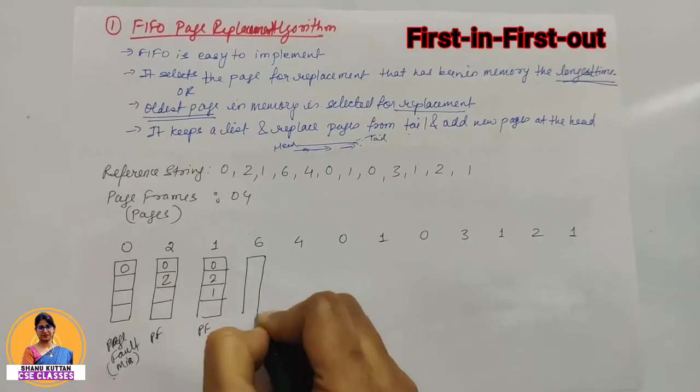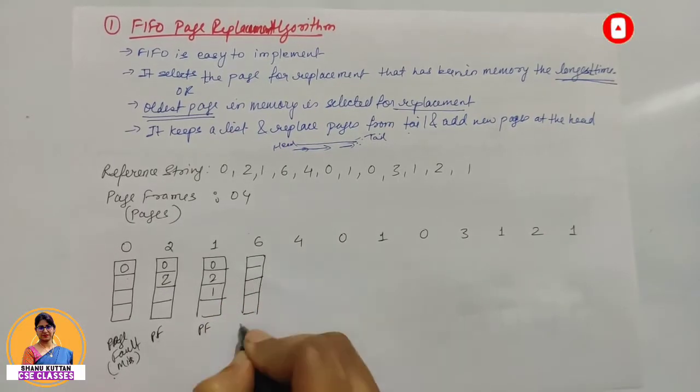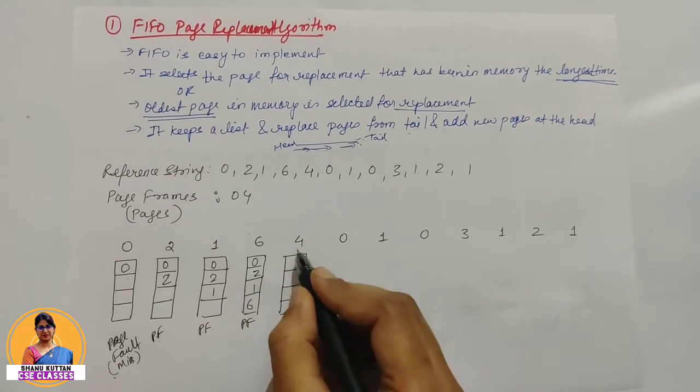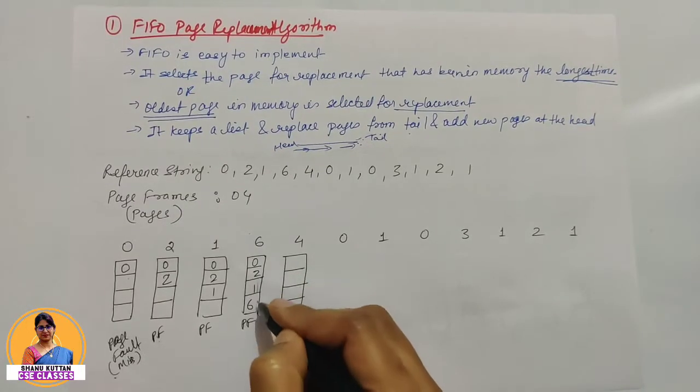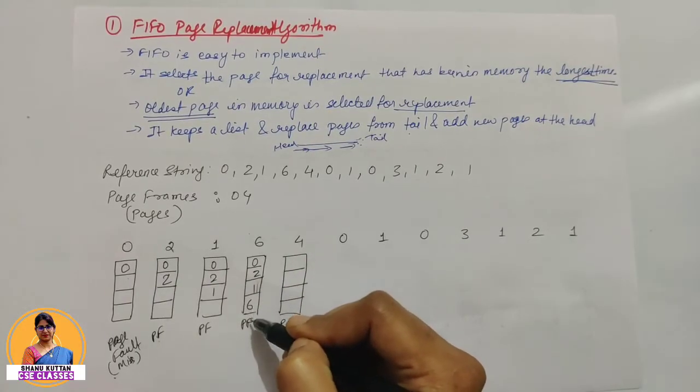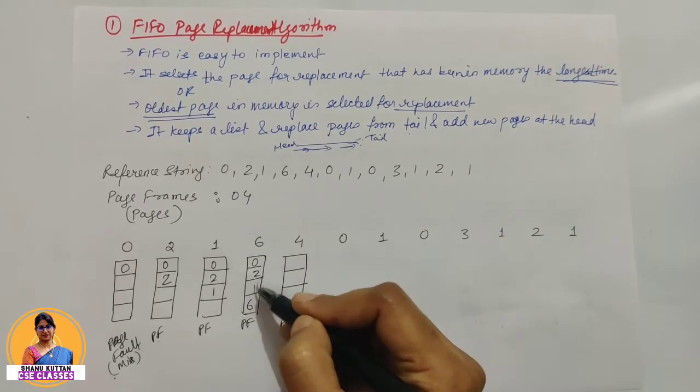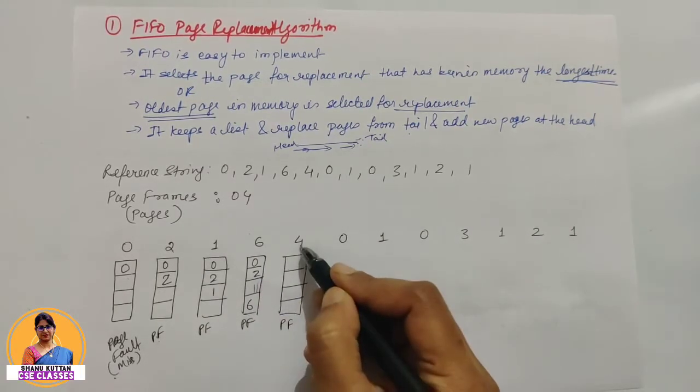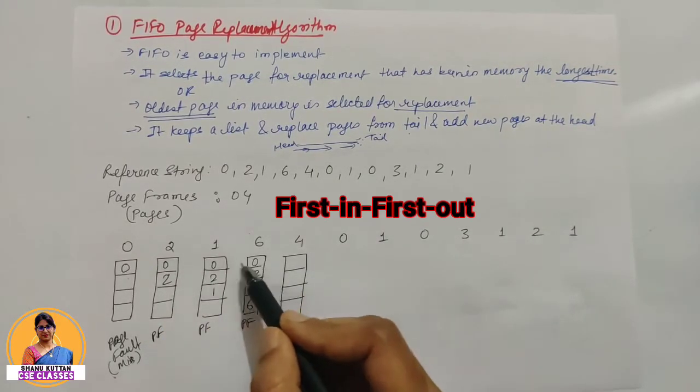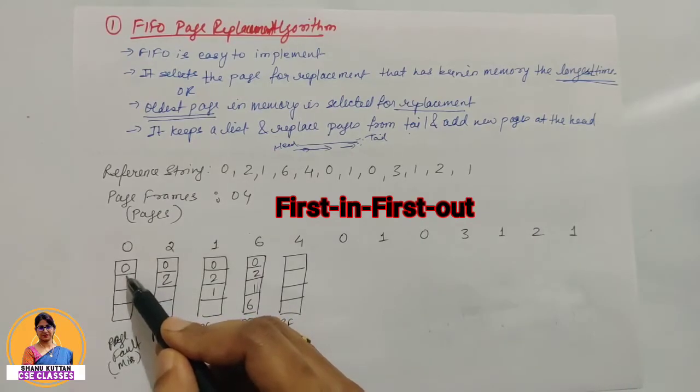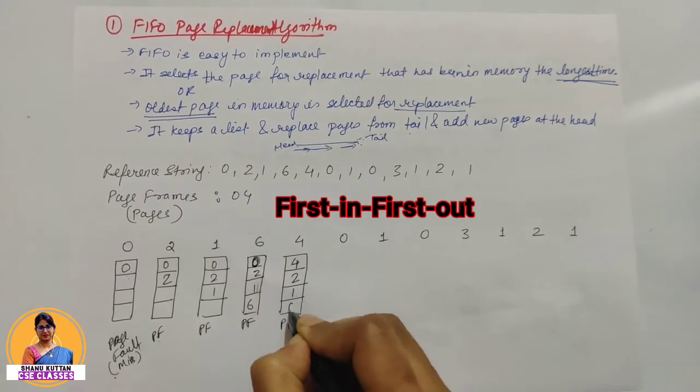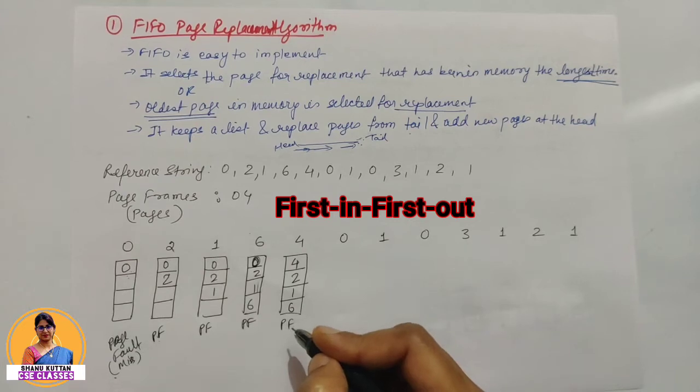Next is 6. Is 6 present in memory? No, page fault. Now we have 0, 2, 1, and 6. Next number is 4, page fault. Now 4 - here is full. We have to put FIFO page replacement. Which page will be removed? The oldest page in memory is 0, so we replace 0 with 4. Rest as it is. This is FIFO page replacement.